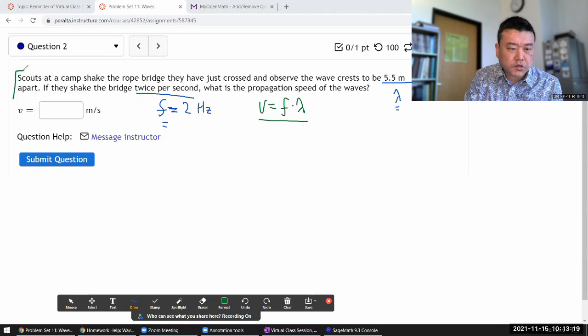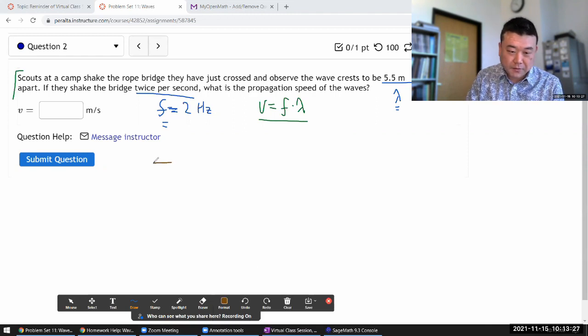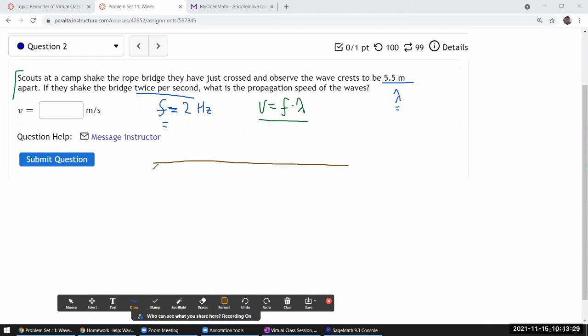So as you are reading the question, it's a good practice to build a mental image. I hope you have an image of a rope bridge, or to simplify, just a rope. And what the question is describing is the scouts are shaking maybe one end up and down.